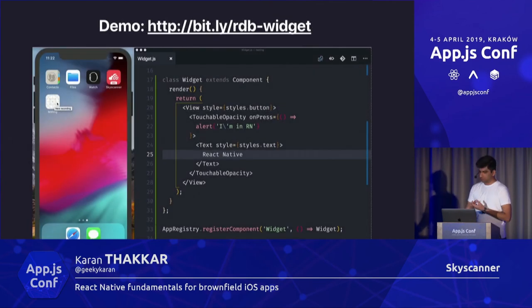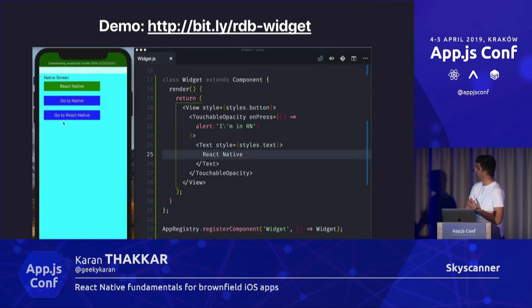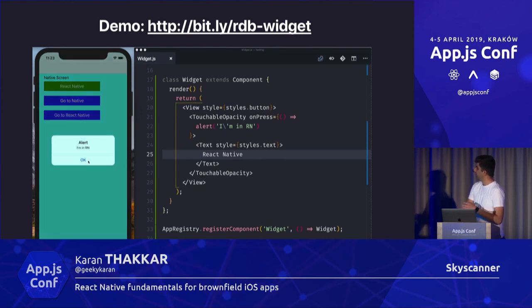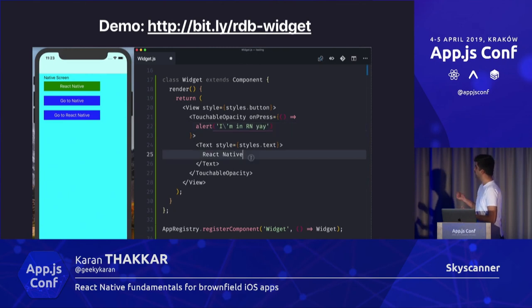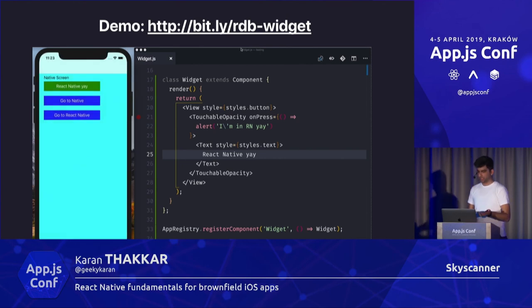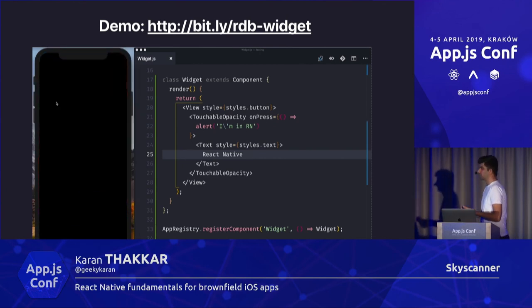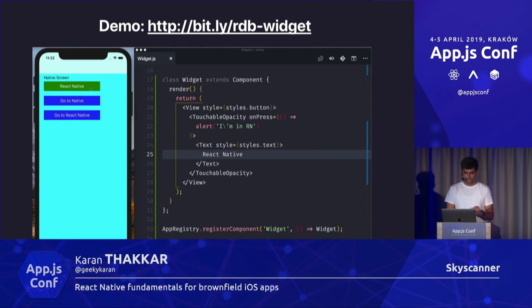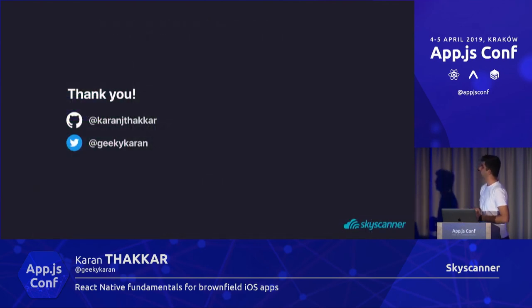In this demo, this is a native screen and only the green button you see is written in React Native. Everything else is completely native, and you can see that when I change things on the right it changes on the native side as well. This way you have the option to reuse your React Native component in your native screen whenever you need to. There's a link to both demos at the top. That's all I have — thank you so much. This is my Twitter handle and I'll share the slides later on Twitter, so keep an eye out.